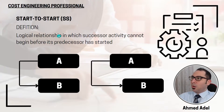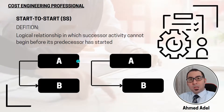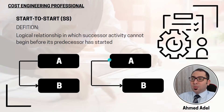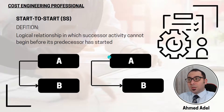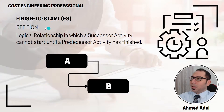The second relationship is start-to-start. This is a logical relationship in which a successor activity cannot begin before the predecessor has started. The start of the successor depends not on the end of the predecessor, but on the start of the predecessor. They can both start at the same time, or the predecessor starts first and after some time the successor starts.